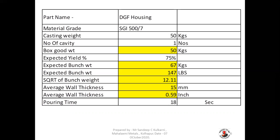The expected bunch weight is 67 kg, which I am converting into LBS, giving a bunch weight of 147 LBS. The square root of the bunch weight is 12.11. The average wall thickness is 15 mm, which I am converting to inches — giving 0.59 inches.